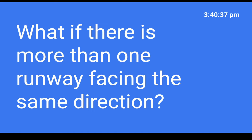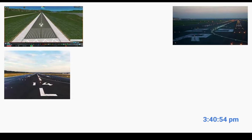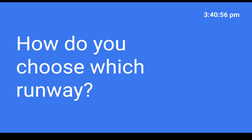But what if there's more than one runway facing the same direction — for example, two runways with a heading of 190, making both runway 19? You simply add a letter: 36 Left, 36 Center, and 36 Right. You can have lots of different parallel runways designated that way.